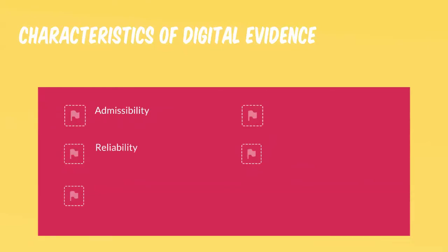The second characteristic is reliability — the evidence must be from an undisputed origin. The third characteristic is completeness. The fourth characteristic is that it must be convincing and understandable by the judges.